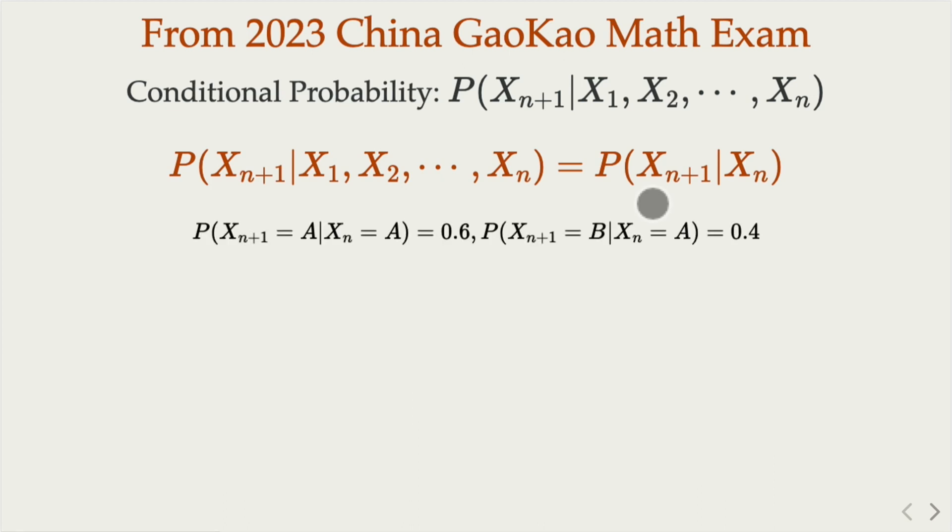If X_n equals A, the next one is still A with 0.6 probability. We switch the player with 0.4 probability. Similarly, if B is playing, Bob has a higher chance to remain in the game. For 0.2 probability, he will switch to Alice. That's the key. This is a very typical Markov chain.